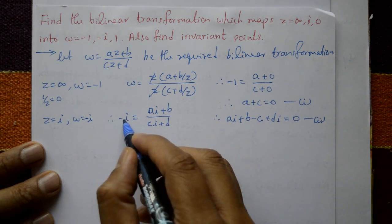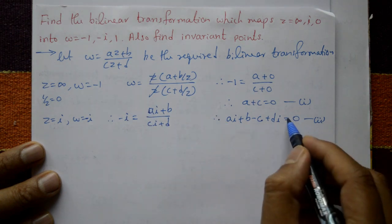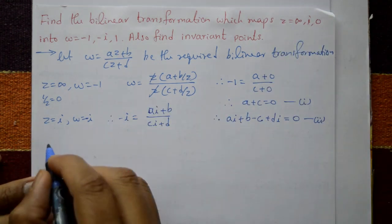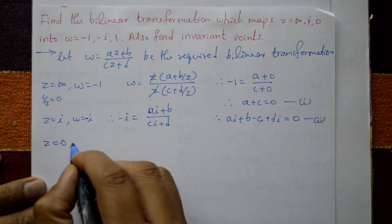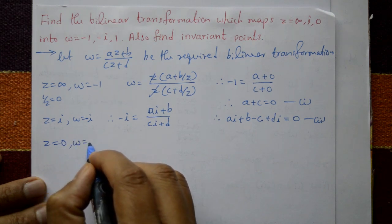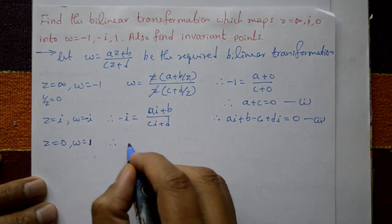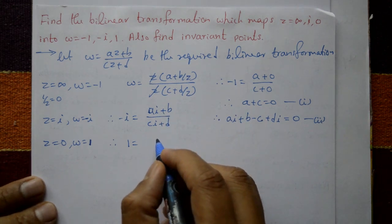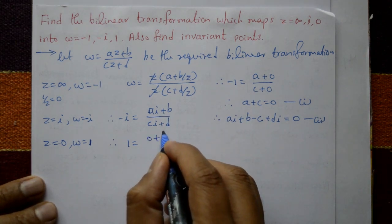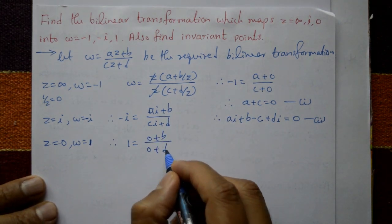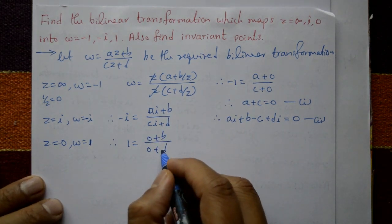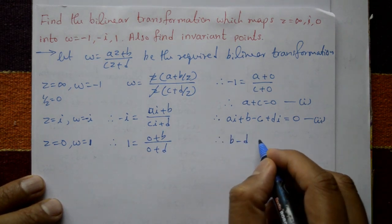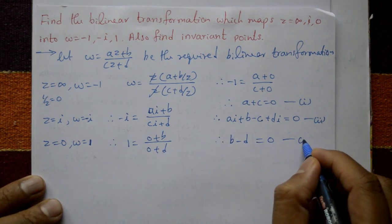Third case: z equal to 0 and w equal to 1. Substituting, 1 equals (0 + b) / (0 + d), which gives b/d equal to 1. Multiplying and rearranging gives b minus d equal to 0. This is equation number three.